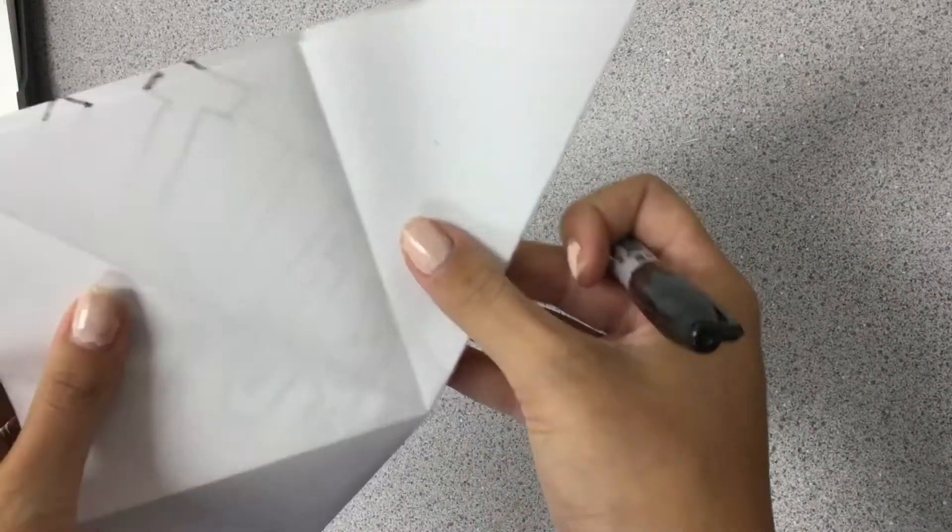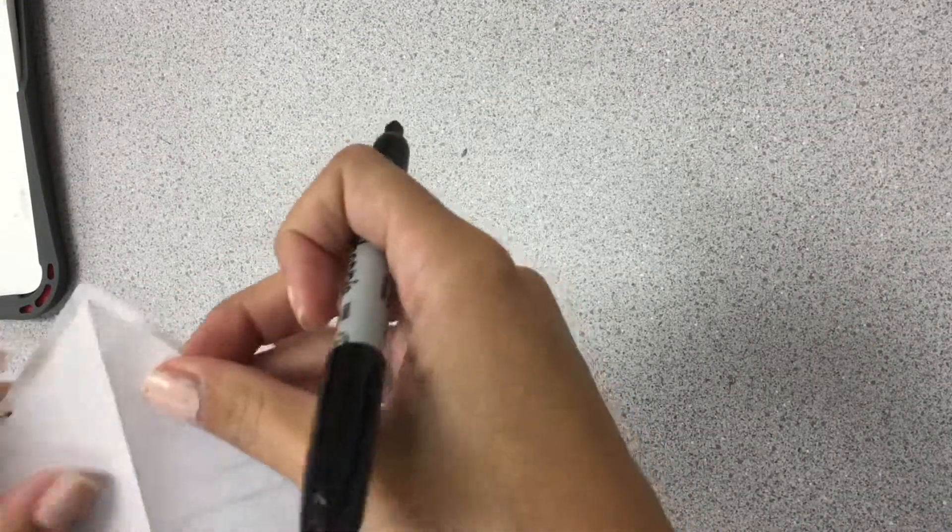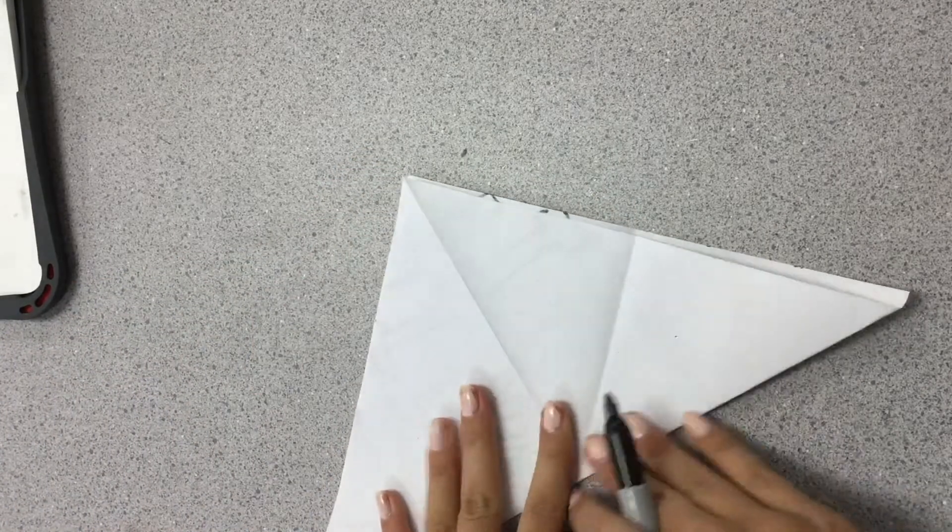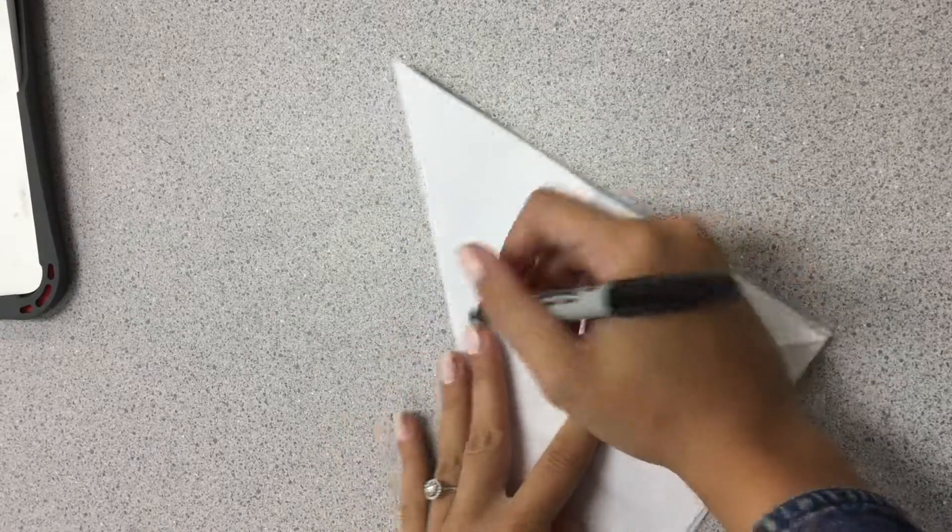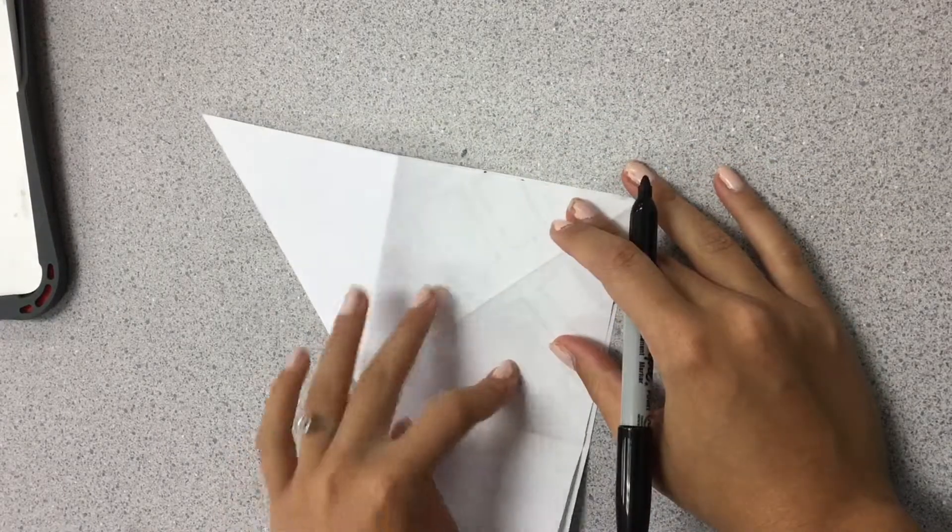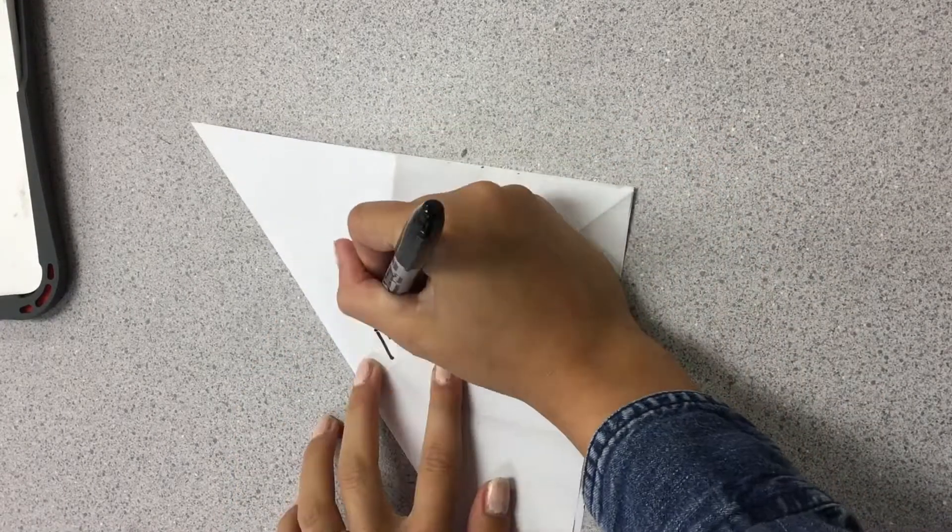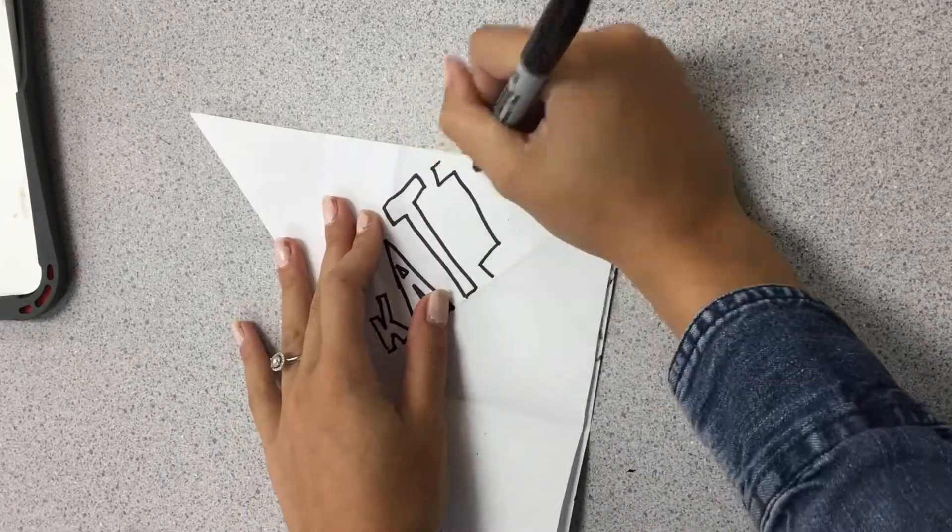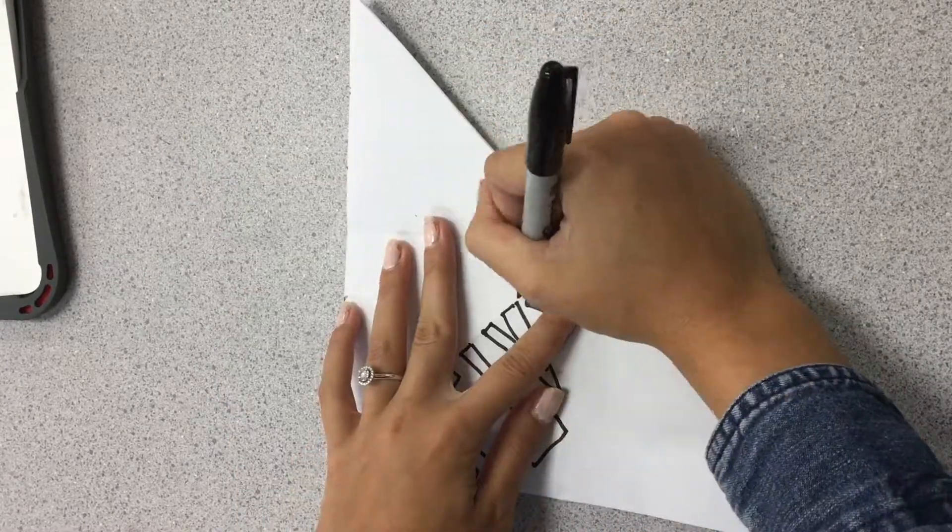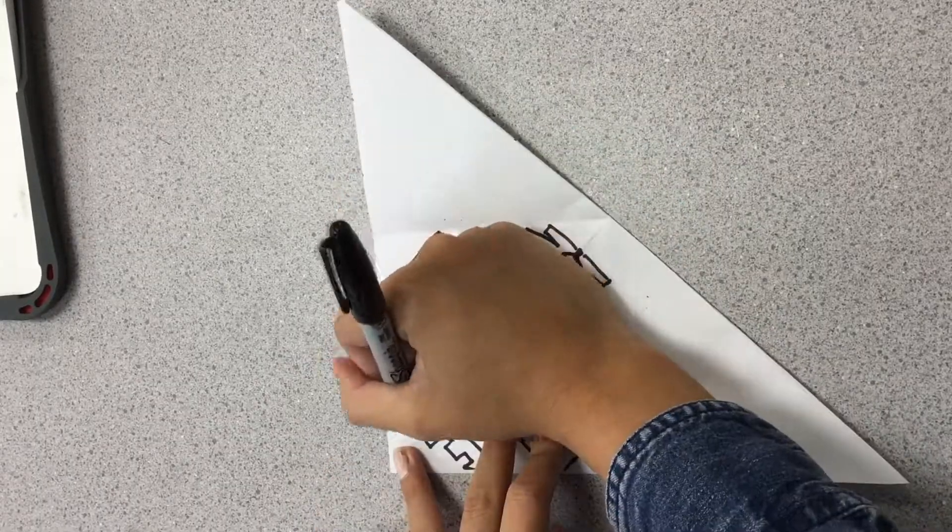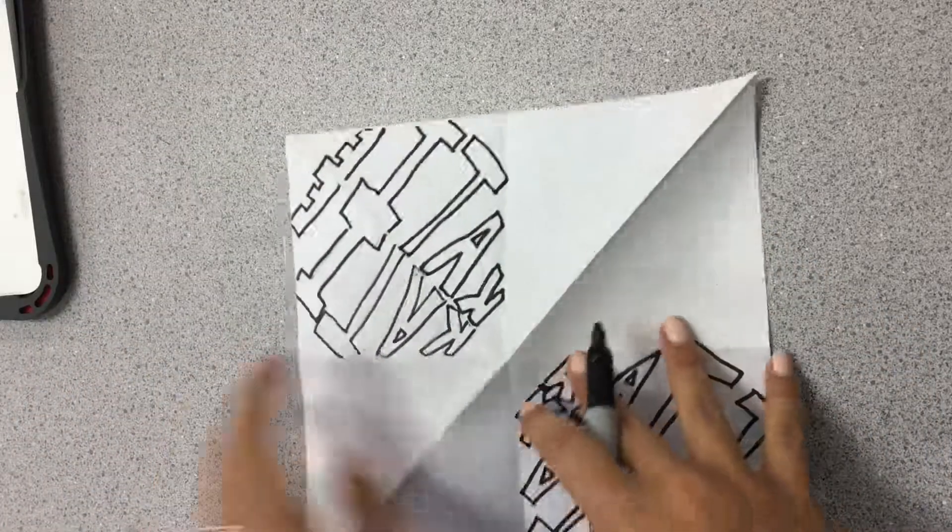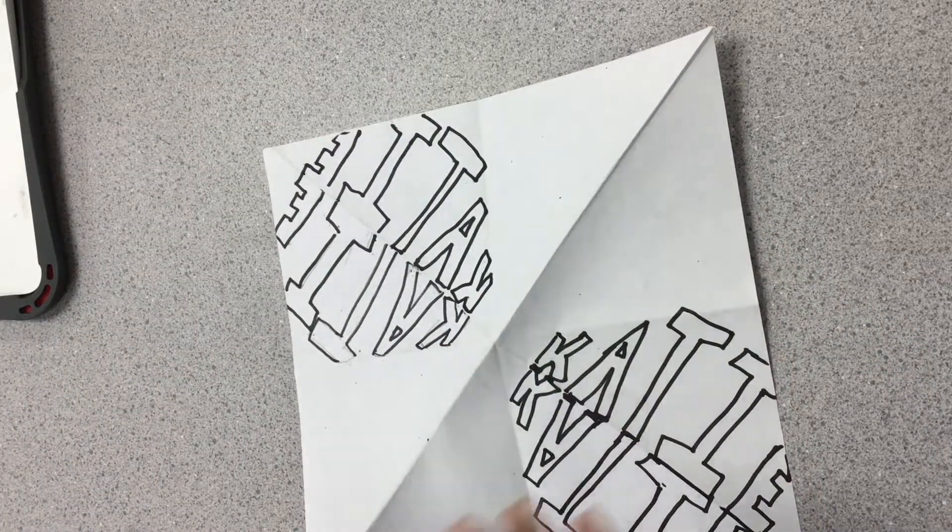So I'm going to fold it in half. Try to make sure that my lines are touching. And then I'm going to trace again. See how I can see my lines. So I have these two sides. Open it up. These two are done.